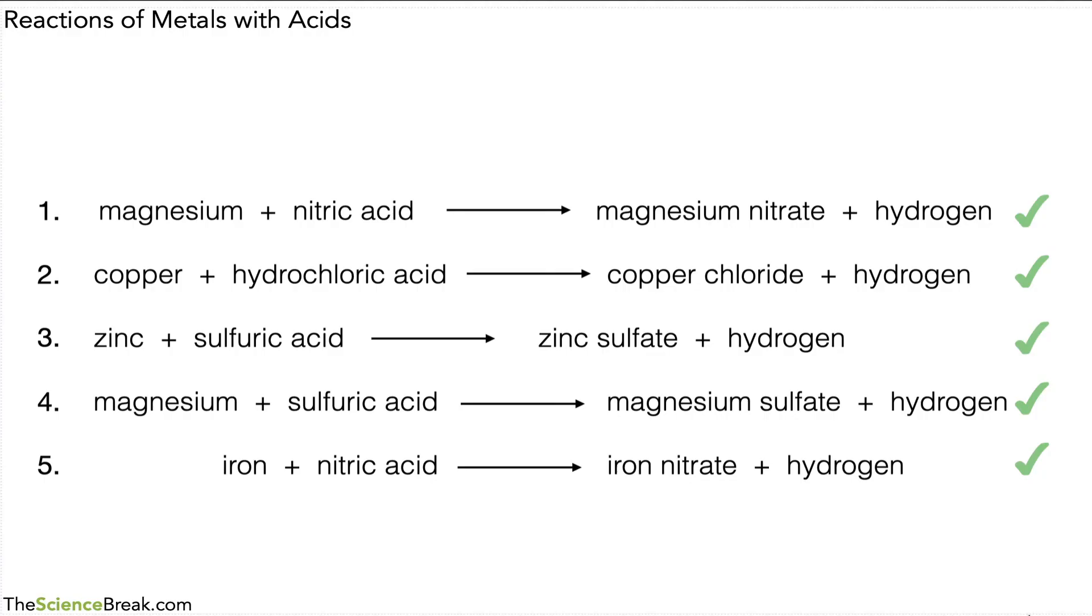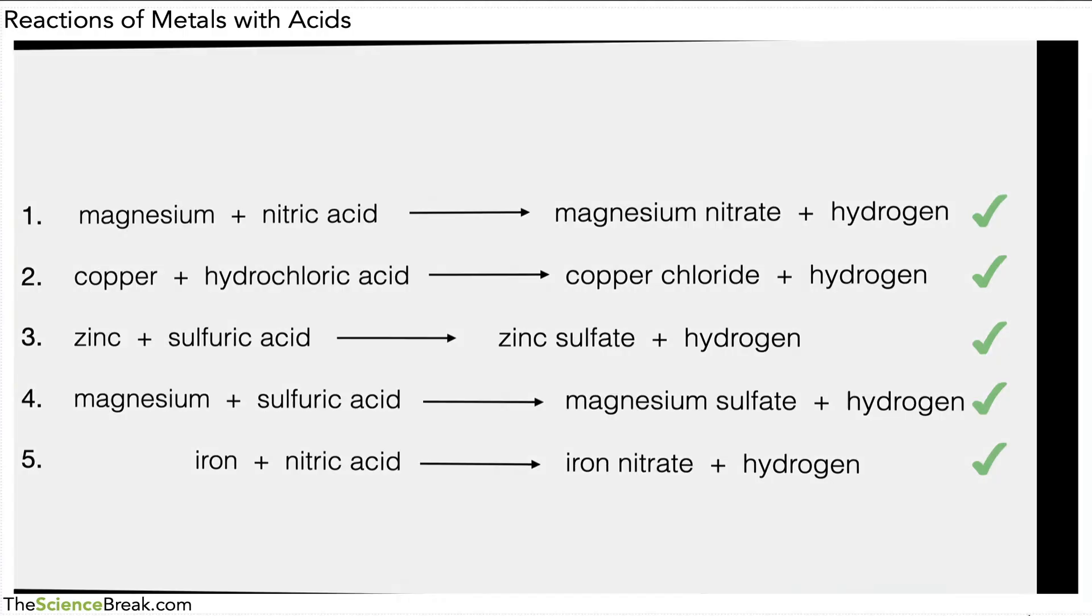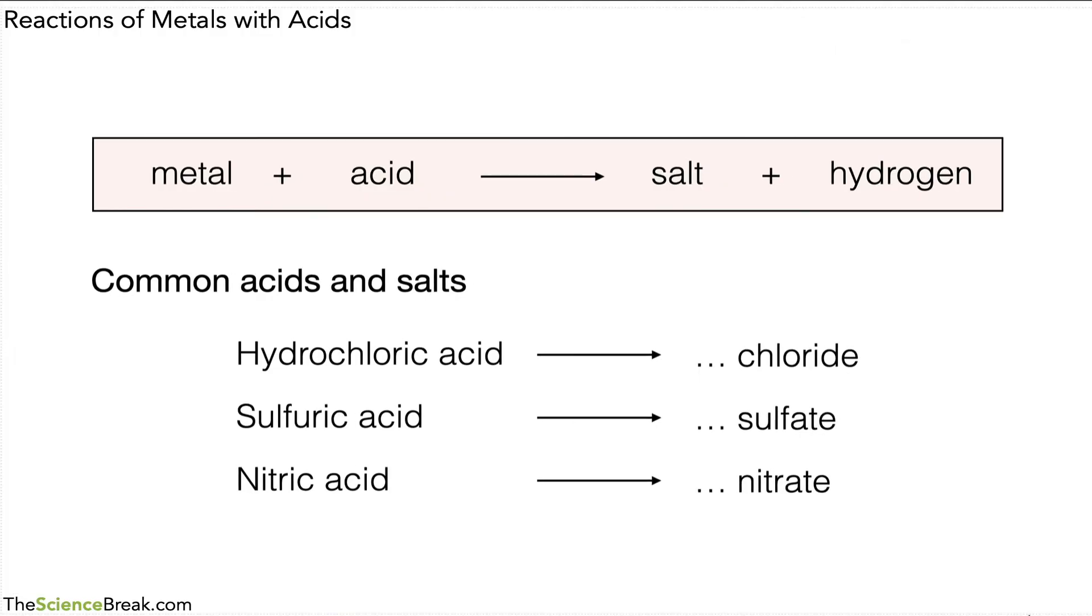And the final thing then to remember is that we should remember the general equation: metal plus acid gives salt plus hydrogen. And the common acids that we work with in science are hydrochloric, sulfuric, and nitric, and those are the types of salts produced by each of them.